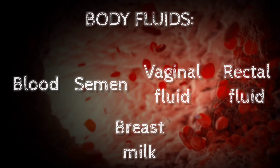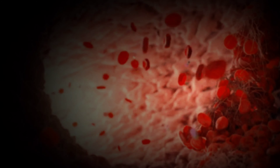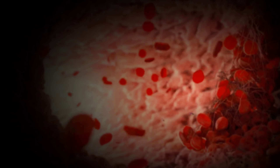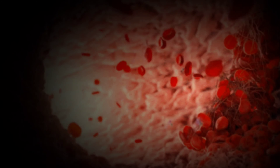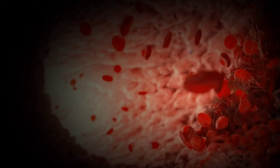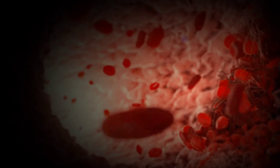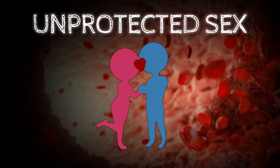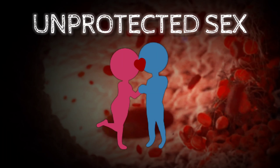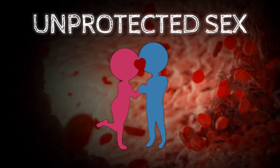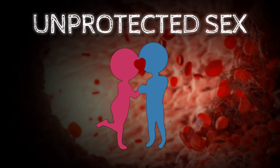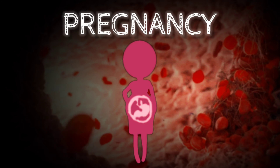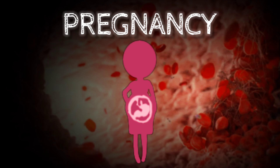Now, how is HIV transmitted from person to person? First, it can be transmitted through body fluids such as blood, semen, vaginal fluid, rectal fluid, and breast milk. For transmission to occur, there must be direct contact with a person with HIV, including transmitting HIV through the bloodstream of a person without HIV.